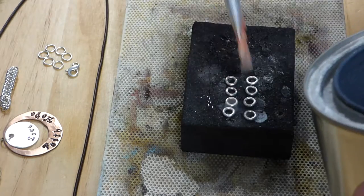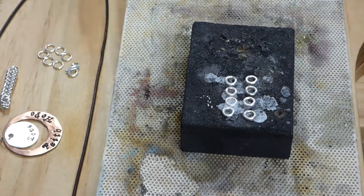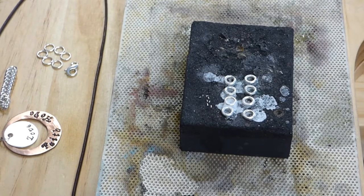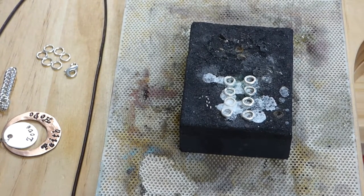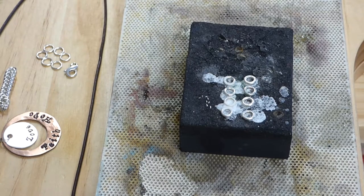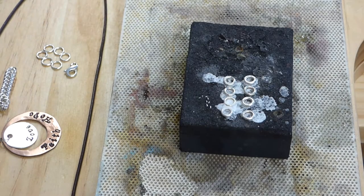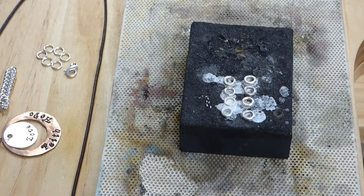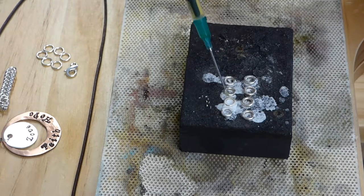First step is soldering the rings. And you don't have to have a really nice torch or anything to do this. The white stuff you saw me dabbing on there with a paint brush is boric acid powder dissolved in denatured alcohol. And then you just dab it on there and light it on fire. The alcohol burns off leaving the boric acid powder. Reduces the amount of fire scale and clean up on the rings dramatically. Then of course flux the joints of the rings.